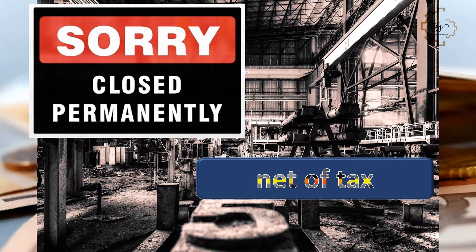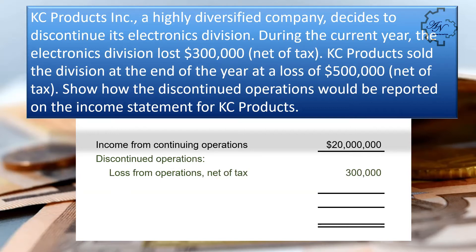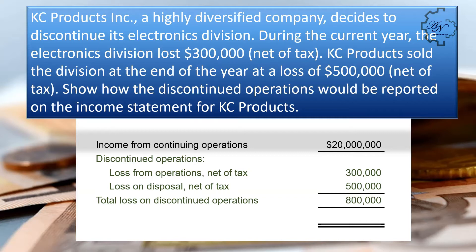Illustration: KC Products Incorporated decides to discontinue its electronics division. The electronics division lost $300,000 net of tax. KC Products sold the division at a loss of $500,000 net of tax. On the income statement: income from continuing operations is $20 million; discontinued operations show a loss from operations of $300,000 and a loss on disposal of $500,000, totaling $800,000; net income is $19,200,000.